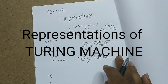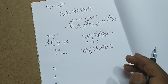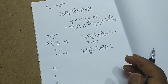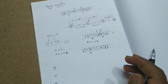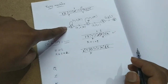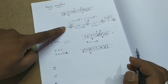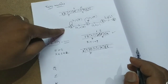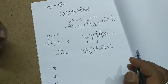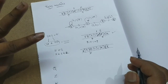Hi friends, welcome back. This is Rashvikal. In previous classes, we have studied about Turing machine which can do addition of two numbers. By using this Turing machine, I am going to represent the three kinds — the three types of Turing machine representations.